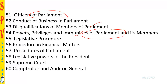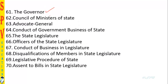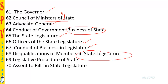We'll cover the duties of the Prime Minister, Parliament, readjustment during each census, qualifications for membership of Parliament, the President's special address, officers of Parliament, business carried out in Parliament, disqualifications of a member of Parliament, powers, privileges and immunities of Parliament and its members, legislative procedure for passing a bill, financial matters and money bills, and procedures of Parliament.